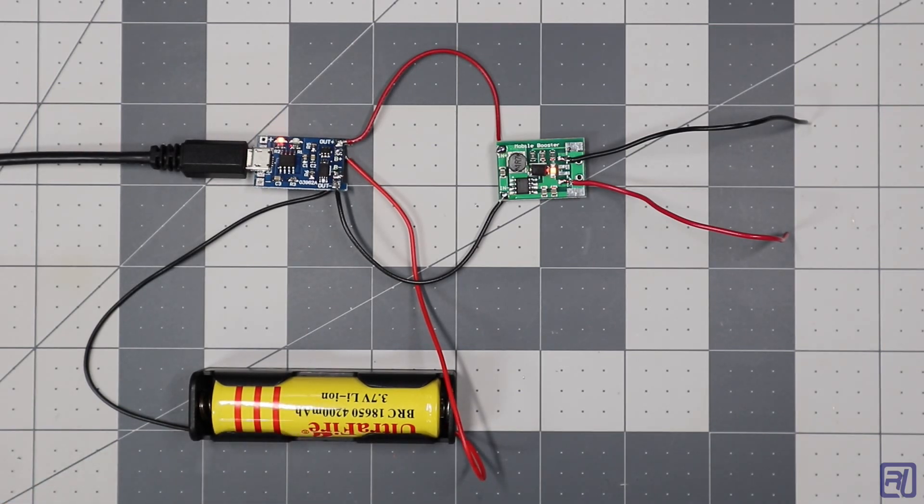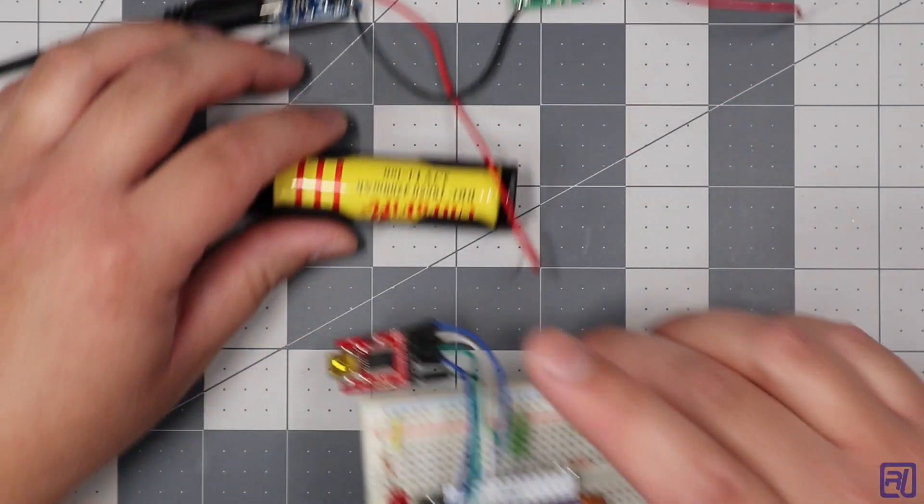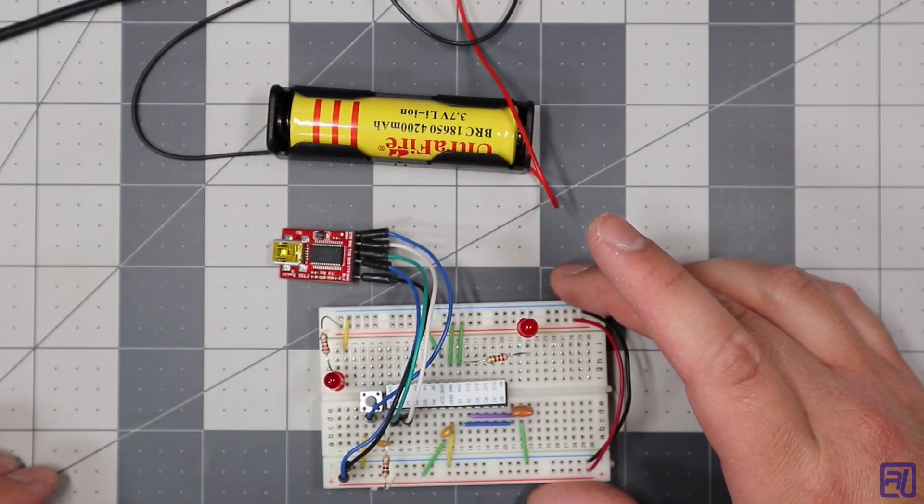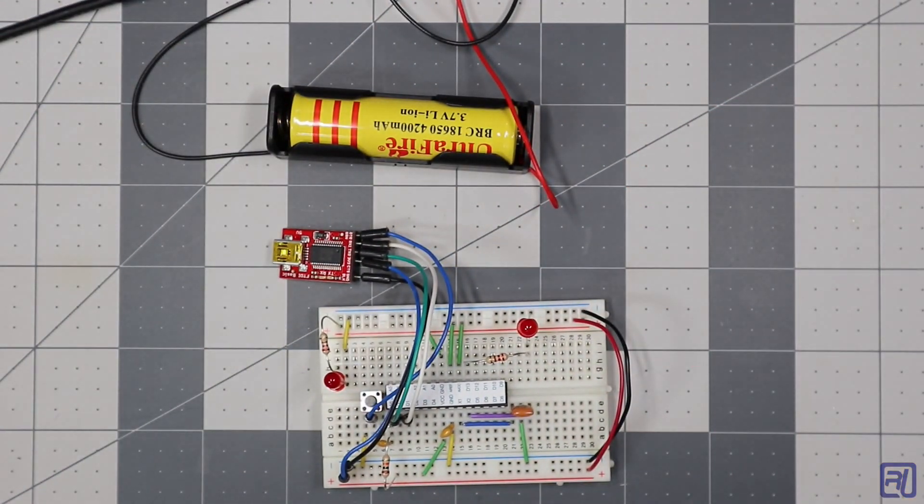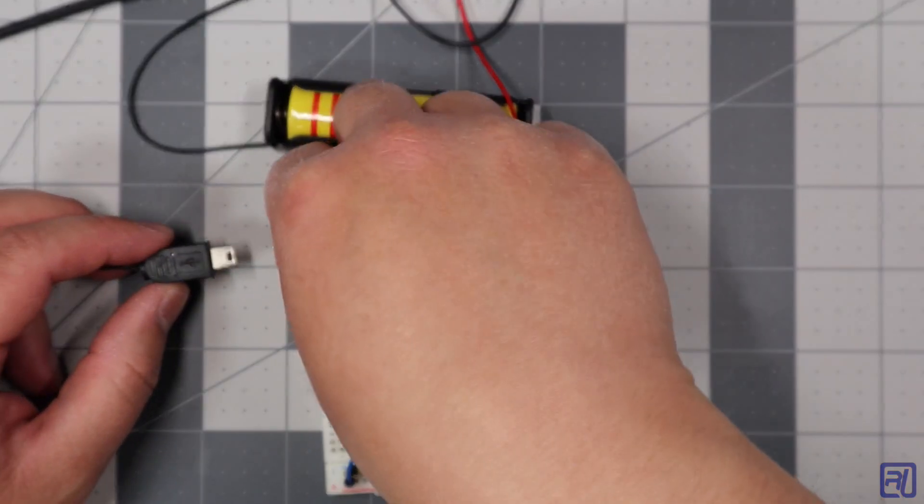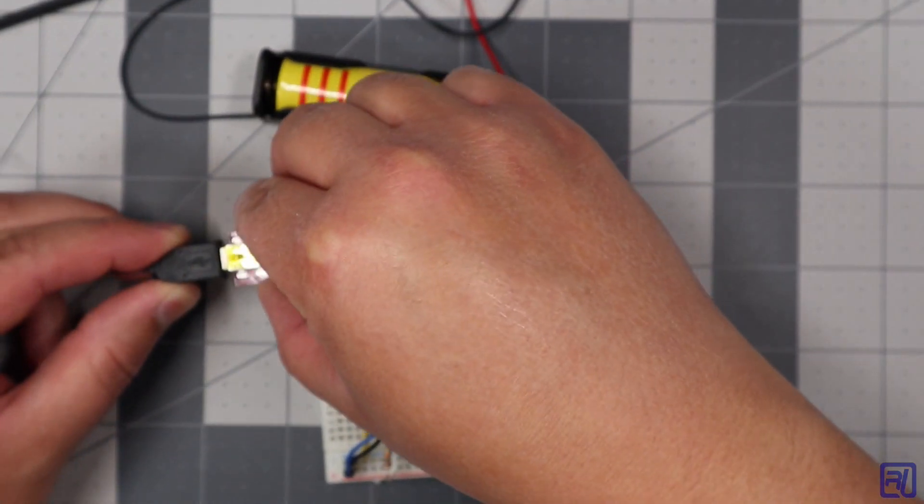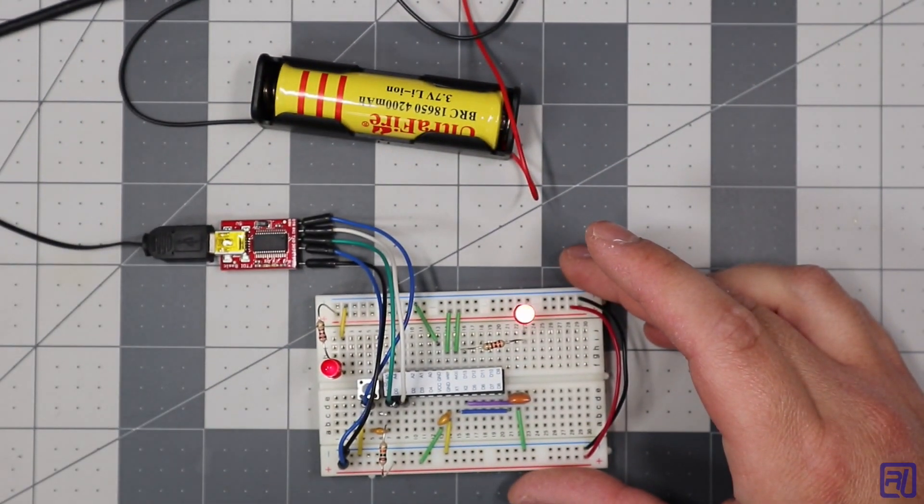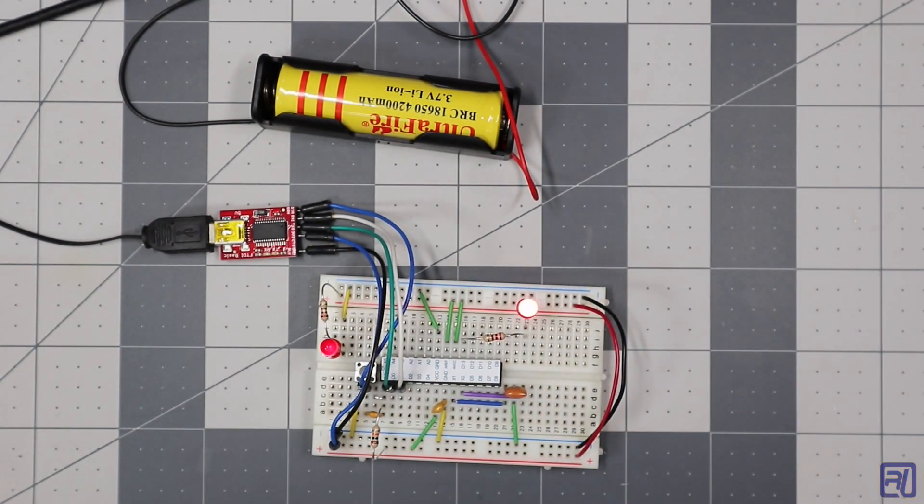Now to show you that this works, I'm going to power this small little breadboard Arduino that I built a while ago. It's very simple. The red LED is going to blink. So what I'll do is I'll power it from USB first to show you that it actually works. There you go, you can see the red LED blinking.